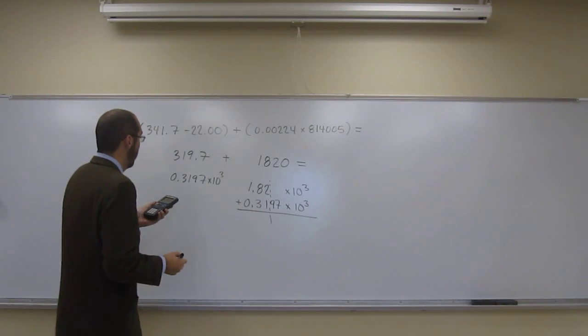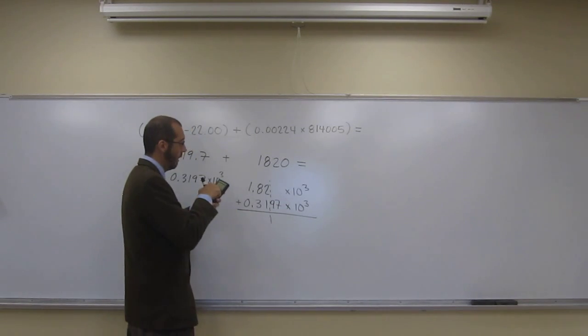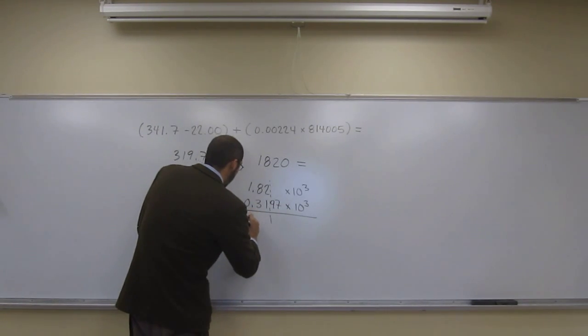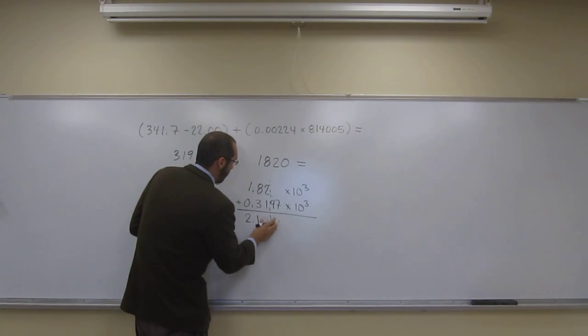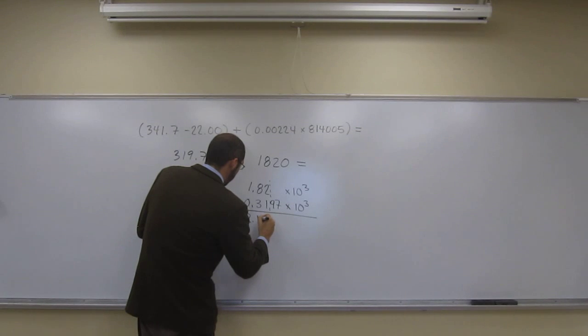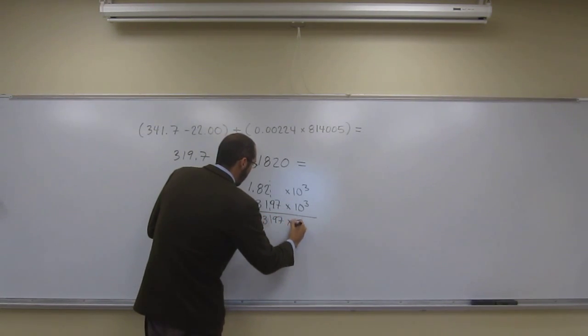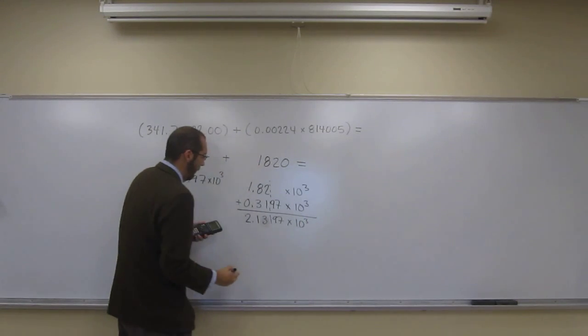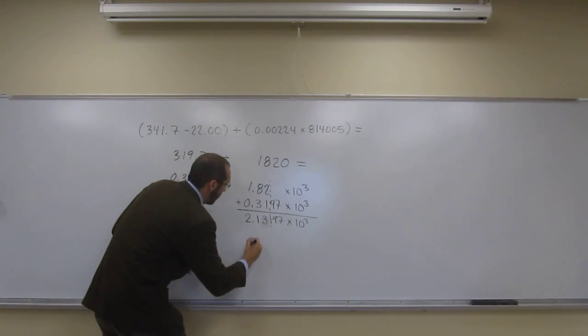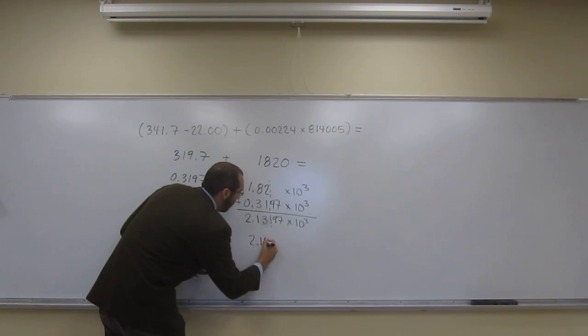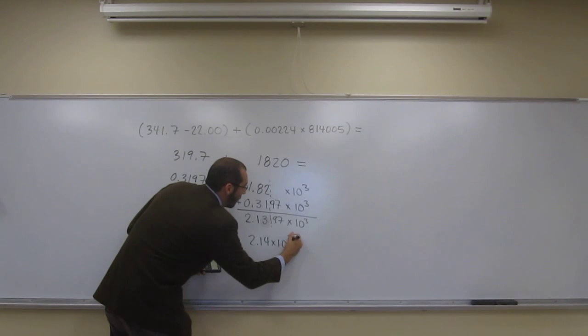And then here to the 3, 1, 2, 3, I get 2.14 essentially, because it's going to be, I guess we'll write it out. So 2.1397 times 10 to the third, right? But if we're cutting it off there, it's going to be 2.14 times 10 to the third.